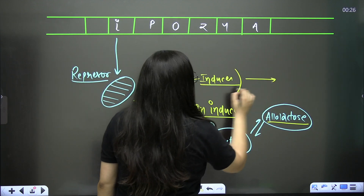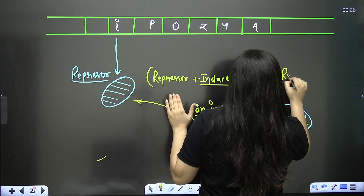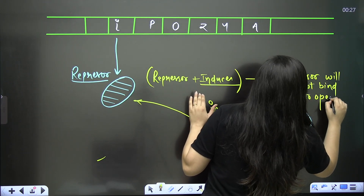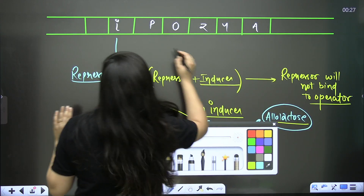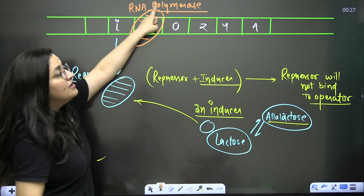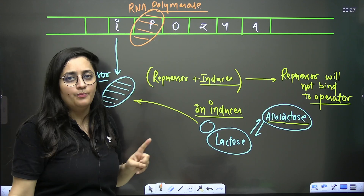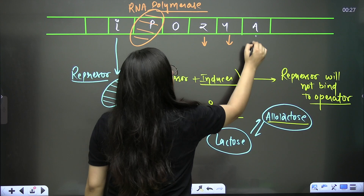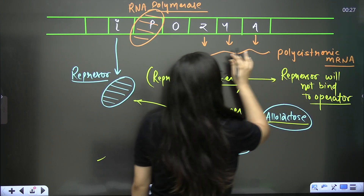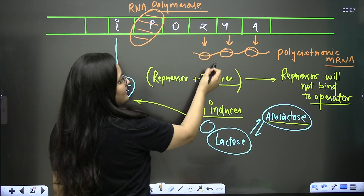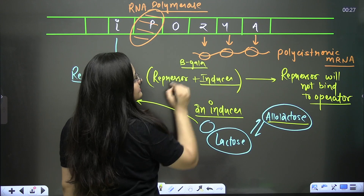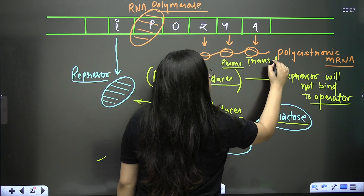The inducer here is lactose — specifically allolactose, its isomerized form. This is a previous year question. When the repressor binds with the inducer, the operator site becomes free. RNA polymerase binds to the promoter, and transcription proceeds. The result is a polycystronic mRNA encoding three enzymes: beta-galactosidase from gene Z, permease from gene Y, and transacetylase from gene A.